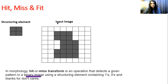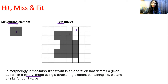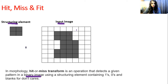Here you can see this is the input image and this is the structuring element. The input image consists of black pixels and white pixels — zeros and ones. The structuring element consists of four black pixels in a 2x2 shape. This structuring element may contain all ones, all zeros, blanks or don't cares, or a combination of ones and zeros. Before starting hit or miss transform, let's understand the meaning of hit, miss, and fit.